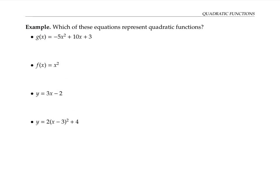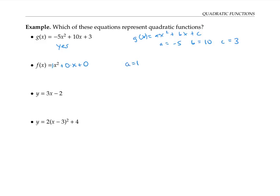Please pause the video for a moment and decide which of these equations represent quadratic functions. The first function can definitely be written in the form g(x) = ax² + bx + c. In fact, it's already written in that form, where a is negative five, b is 10, and c is three. The second function is also a quadratic function, because we can think of it as 1·x² + 0·x + 0, so it is in the right form where a is one, b is zero, and c is zero.